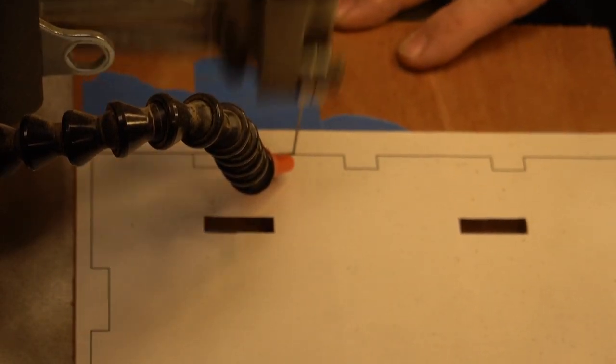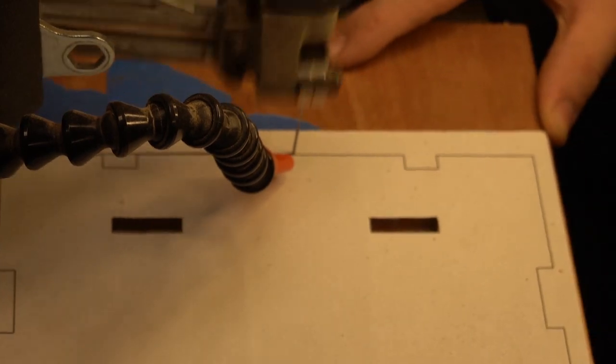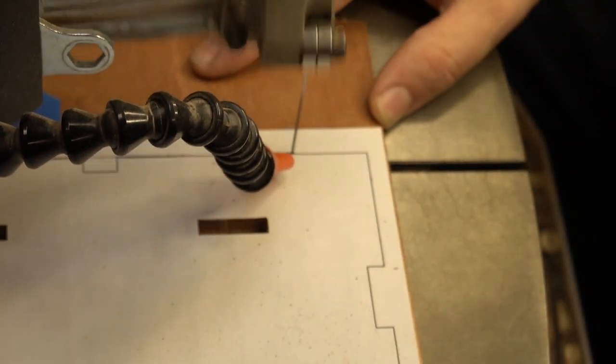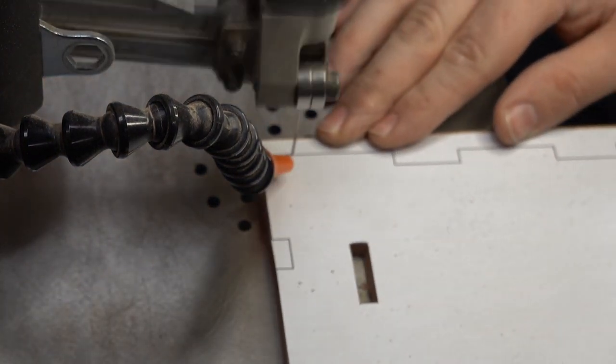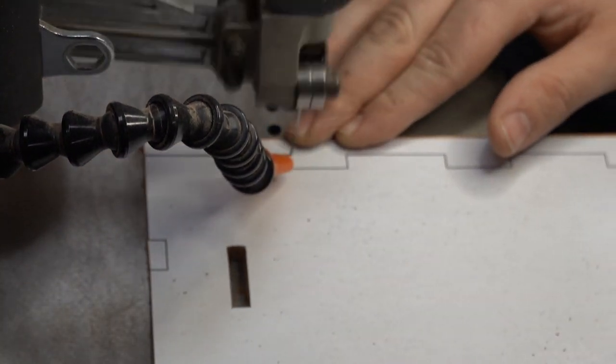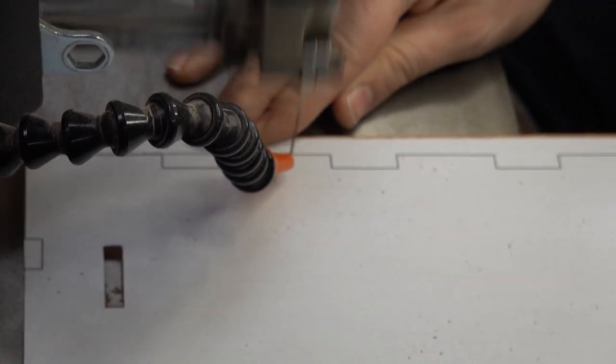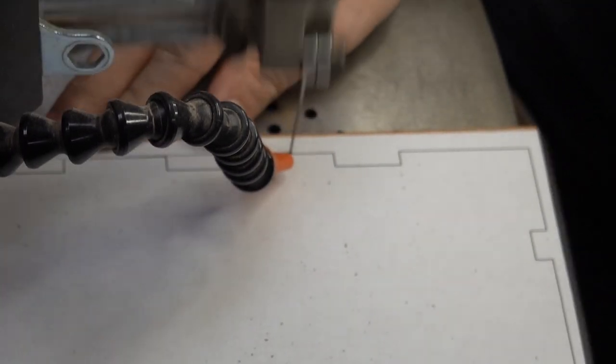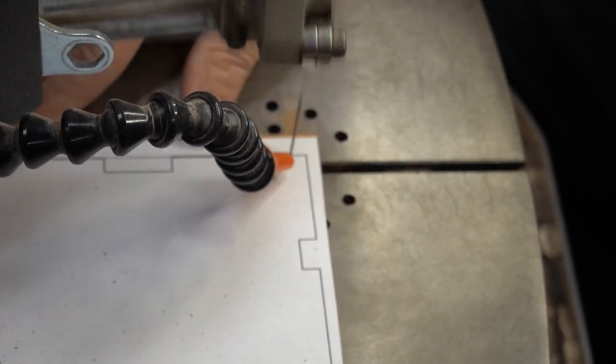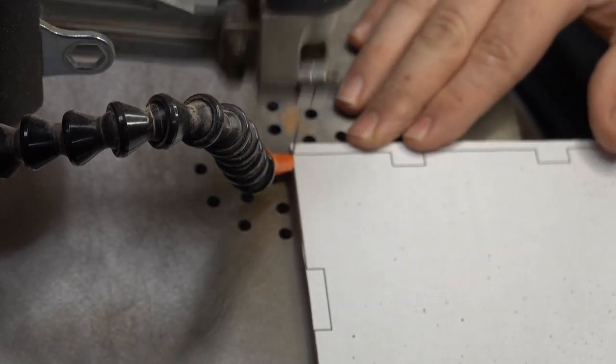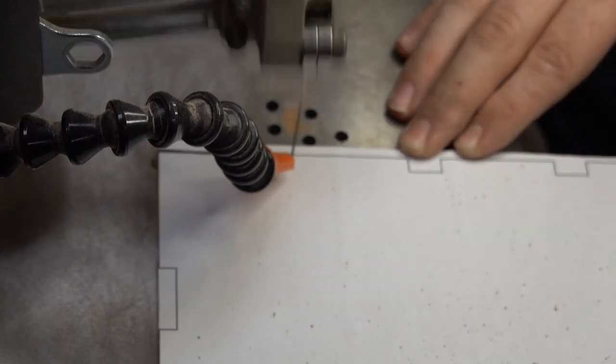My typical method of pattern application is to use blue painter's tape on the stock, and then 3M Super 77 spray adhesive on the back of the pattern, and then after waiting a moment or two for it to get tacky, smooth it out onto the painter's tape on top of the stock. I like to do this because I feel like it makes removing the pattern easy after it's complete.